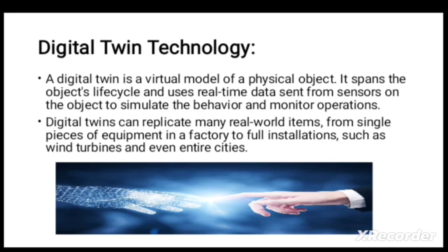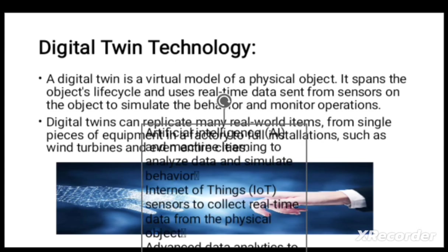We will look at the most common example that we all use in our daily life: Google Maps. Essentially, Google Maps is a real-world application of digital twins. It links real-time data on things like traffic and road work to help optimize and communicate.